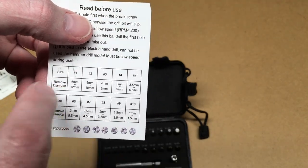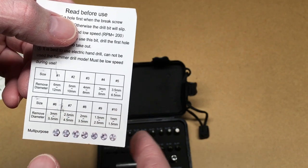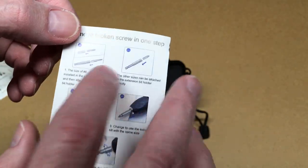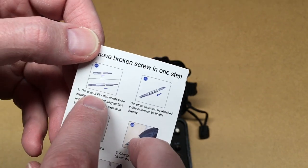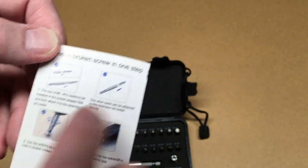This has a little chart on which sizes it supports, one through ten. It says remove broken screw in one step. The size of number six to number ten needs to be installed in the socket adapter first and then attach it to the extension bit holder.